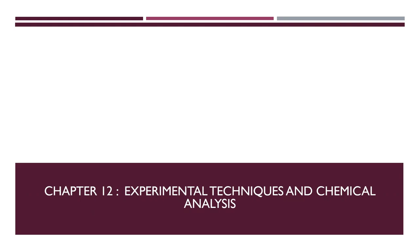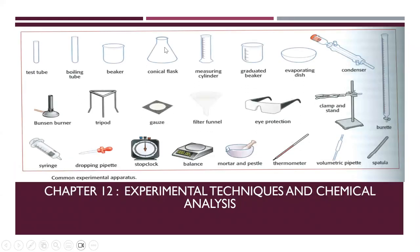We have to talk about some chemical equipment like test tube, boiling tube, beaker, conical flask, measuring cylinder, graduated beaker, evaporating dish, condenser, burette, spatula, lamp and the stand for burette for holding burette, volumetric pipette, thermometer, eye protection, mortar and pestle, filter funnel, balance, gauge, stop clock, tripod, dropping pipette, Bunsen burner, and syringe. We will talk about the importance of some of these equipment in the next few minutes.